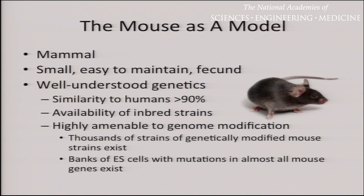Finally, mice are perhaps the first mammal that was highly amenable to genome modification. By this point, 30 years out from the dawn of the age of transgenesis as Peter put it, there are thousands of genetically modified strains of mice in existence. To the extent Peter introduced the idea of doing modifications through embryonic stem cells, there are in fact banks of embryonic stem cells, and mutations in almost all the mouse genes have been developed. You can theoretically go to this bank of embryonic stem cells and obtain the mutation in which you're interested.